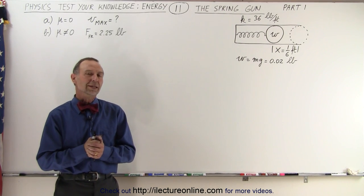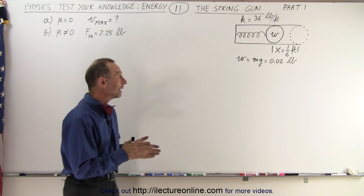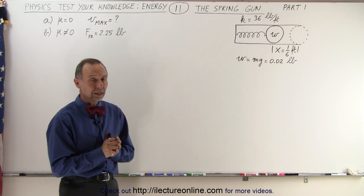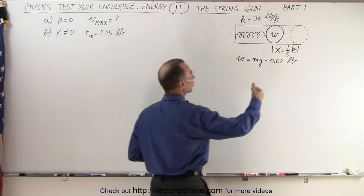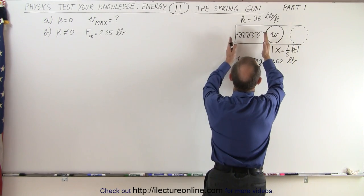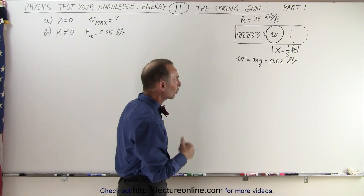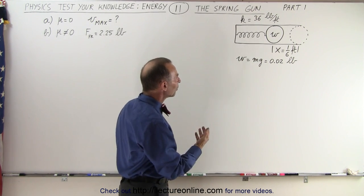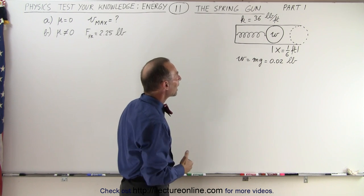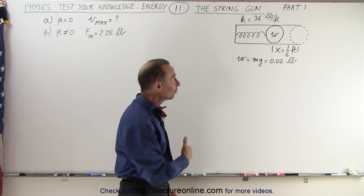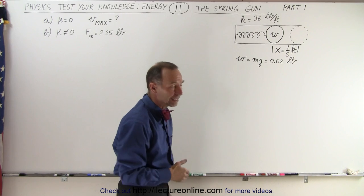Welcome to our lecture online. The next one is a spring gun. What we're doing here is we're pushing the bullet into the gun, compressing the spring a distance of one-sixth of a foot, that's about two inches. The weight of the bullet is 0.02 pounds and the spring constant is 36 pounds per feet.